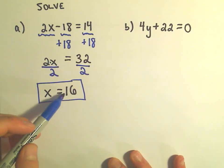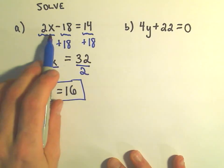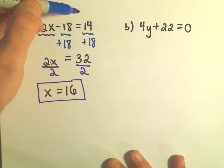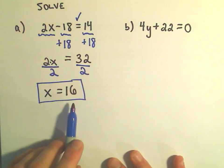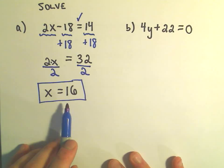Notice if you plug 16 back into the original, you get 2 times 16, which would be 32, minus 18, hey, that would give you 14. So another important thing, you can always check your solutions.